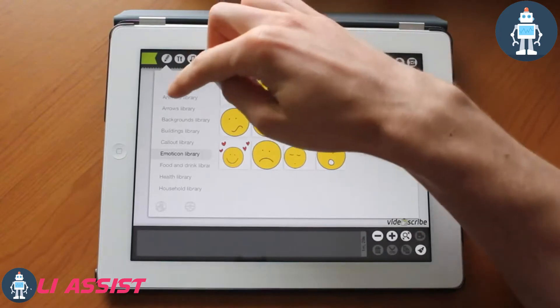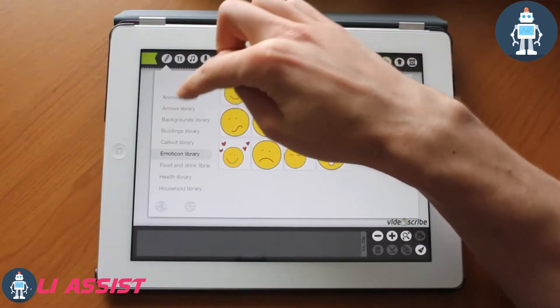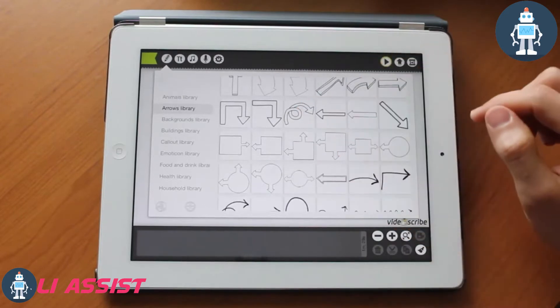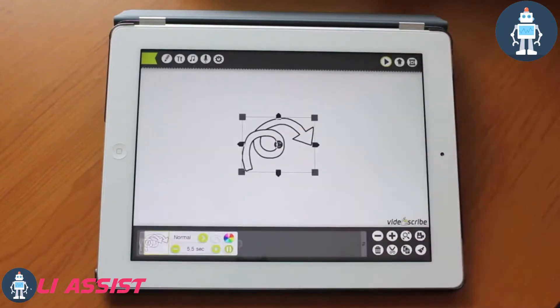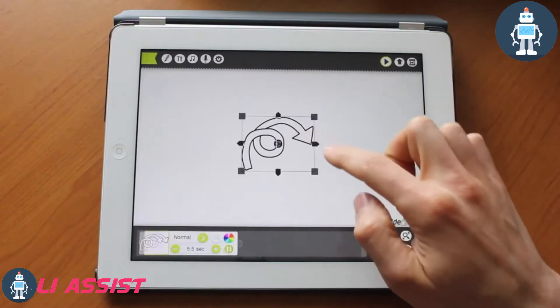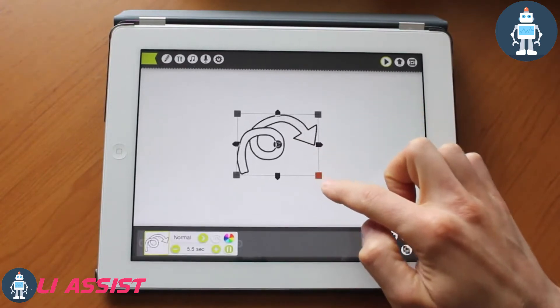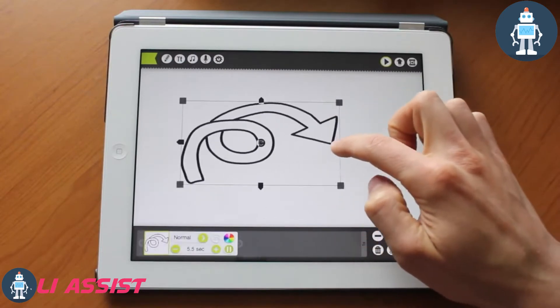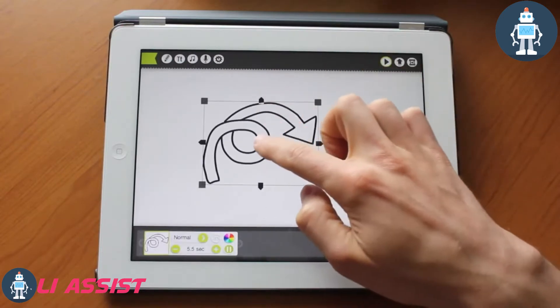Let's go ahead and stick to something simple like an arrow. We'll choose this swirly one for now. If you tap on the object, you could resize it using the corner pieces, you could resize it using the sides, and you can rotate it using the middle just like that.